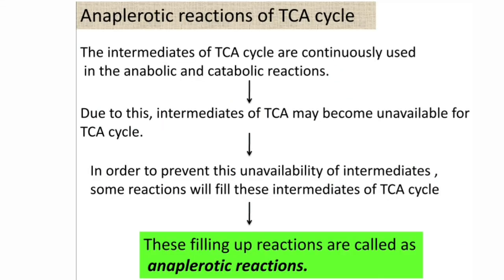Coming to one more important aspect of TCA cycle: anaplerotic reactions. During anabolic and catabolic reactions, the intermediates of the TCA cycle are used up. If these intermediates are not replenished, it will affect the rate of TCA cycle, causing interruption. To prevent this, some reactions fill up the intermediates of the TCA cycle. Those reactions which fill these intermediates are called anaplerotic reactions, or simply 'filling up reactions.'